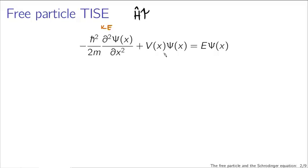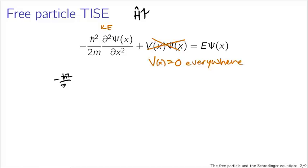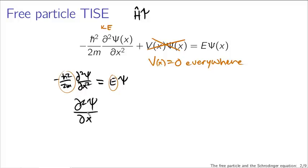In the context of the free particle, where there is no potential, v of x is equal to zero everywhere. That means we can cross out the potential term entirely. What we're left with for the time-independent Schrödinger equation is minus h-bar squared over 2m times the second partial derivative of psi with respect to x equals E psi. Lumping constants together and rearranging, the second derivative of psi with respect to x equals minus 2mE over h-bar squared times the wave function.